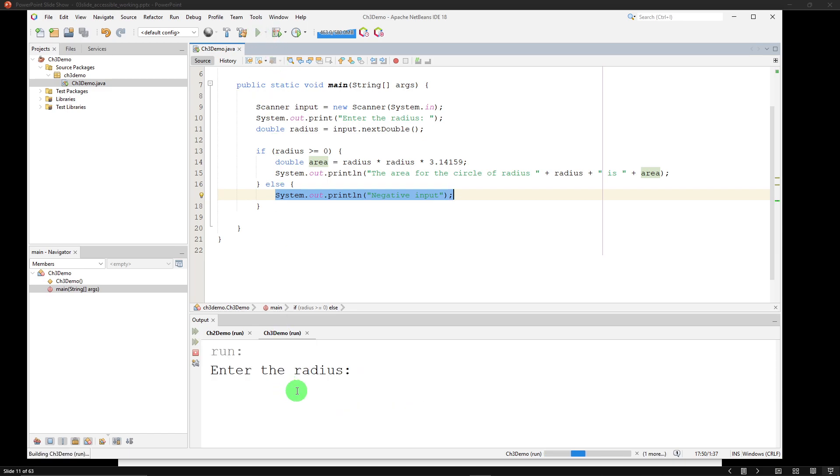So let's do a test. Enter the radius. If I put five, the area for the circle of radius five is 78.53975. No problem there.